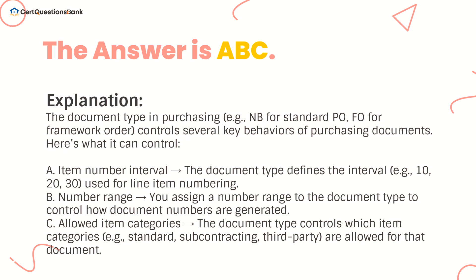The document type in purchasing — e.g., NB for standard PO, FO for framework order — controls several key behaviors. A. Item number interval: the document type defines the interval, e.g., 10, 20, 30, used for line item numbering. B. Number range: you assign a number range to control how document numbers are generated. C. Allowed item categories: the document type controls which item categories — e.g., standard, subcontracting, third-party — are allowed for that document.